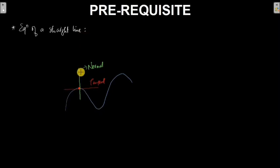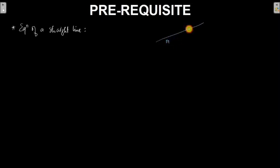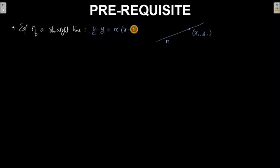From class 11 you have various forms of a straight line. The one you should know is the point-slope form. If a straight line has slope m and passes through the point (x₁, y₁), then its equation is given by y − y₁ = m(x − x₁). This is called the point-slope form.